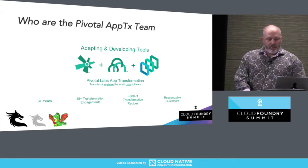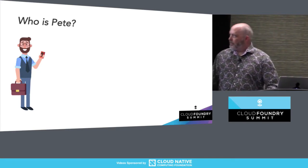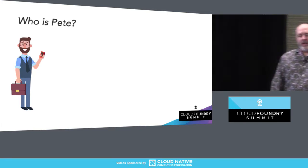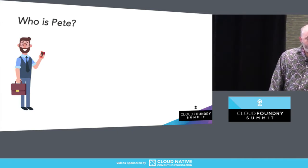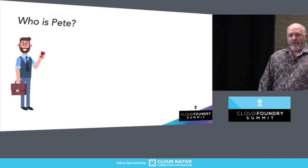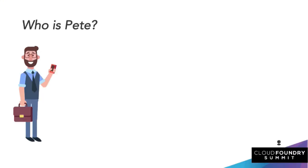This can be a very dry subject, so I'm going to enlist an amalgam character called Pete to help walk us through this. Pete basically represents a collection of customers, and I figured it might be a little bit easier to digest some of this content if we have real-world examples and somebody that looks very hipster like Pete to walk us through this process.